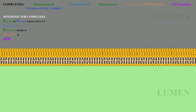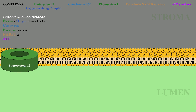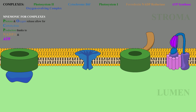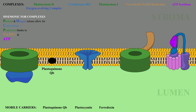Here are the complexes: Photosystem II, Oxygen-evolving complex, Cytochrome B6F, Photosystem I, Ferredoxin NADP reductase, and finally ATP synthase. Mobile electron carriers, listed here, shuttle electrons from one complex to the next. The mobile electron carriers include Plastoquinone Qb, Plastocyanin, and Ferredoxin.